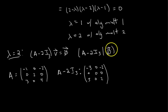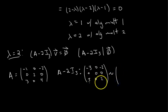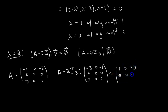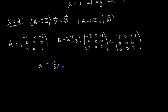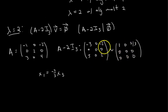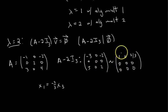I'll leave off the augmented zero column since it won't change under row reduction. After row reducing — doing row 3 equals row 3 plus row 1 and scaling the first row — we get the reduced row echelon form. Writing the solution set in parametric vector form: x₁ equals negative 2/3 times x₃. And here's the good news — we see x₂ and x₃ are free variables. Two free variables means the lambda equals 2 eigenspace is two-dimensional.